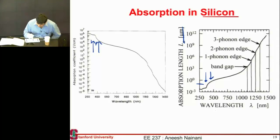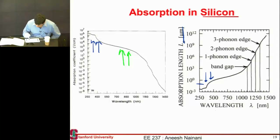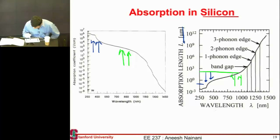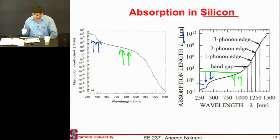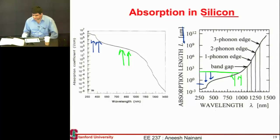If I look at my green photons, which are somewhere intermediate in energy, they have an absorption length of a few tens to a few hundred microns. So if I have a hundred micron cell, I'll absorb most of my green photons in there.